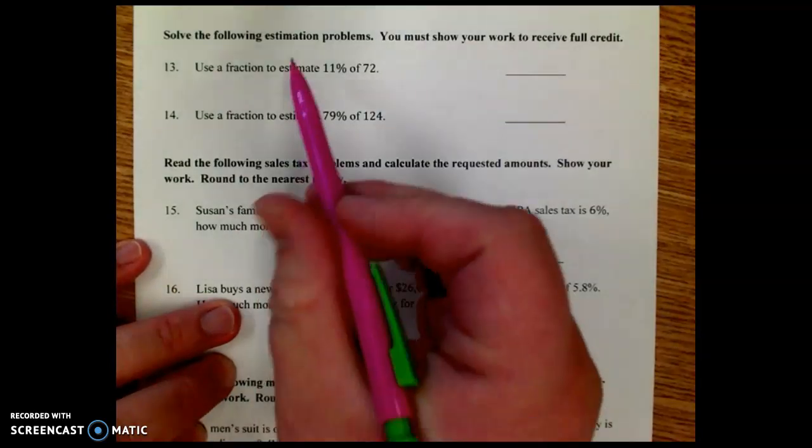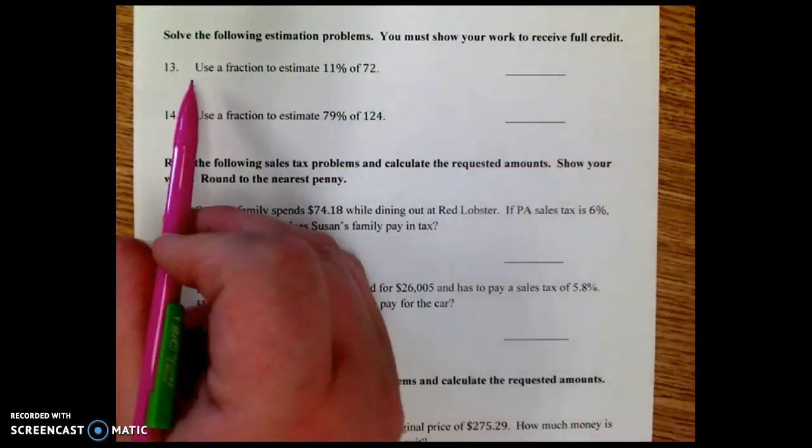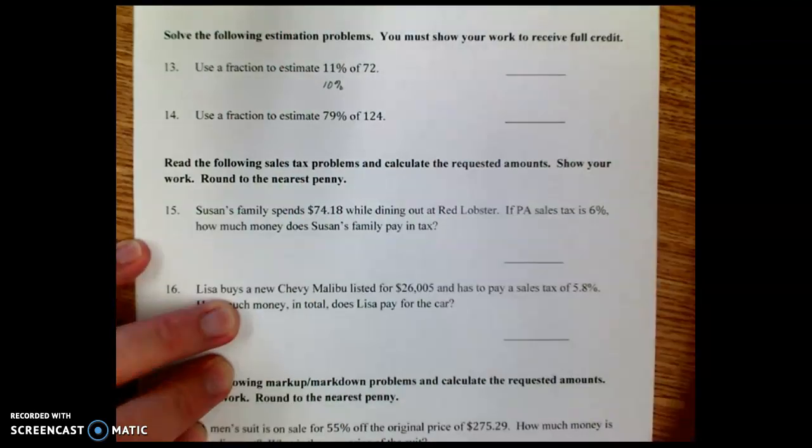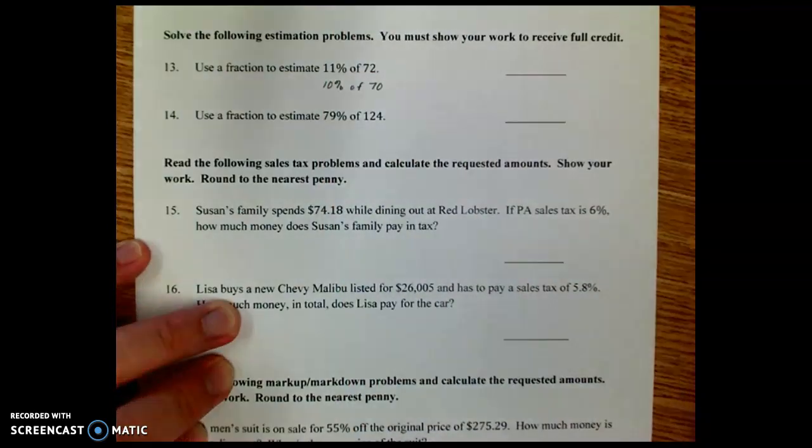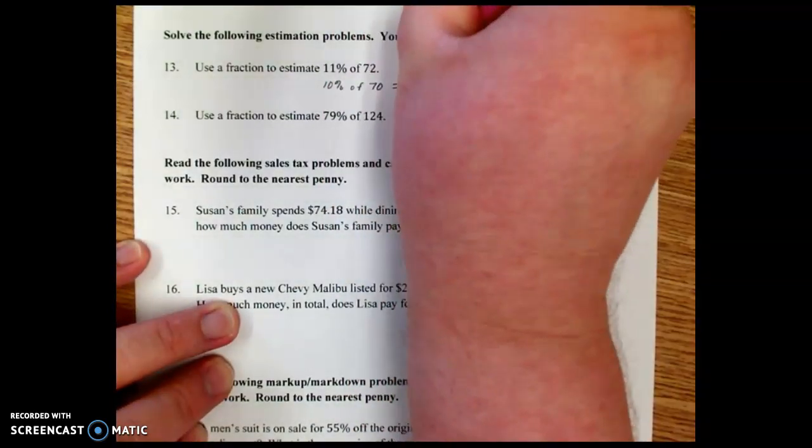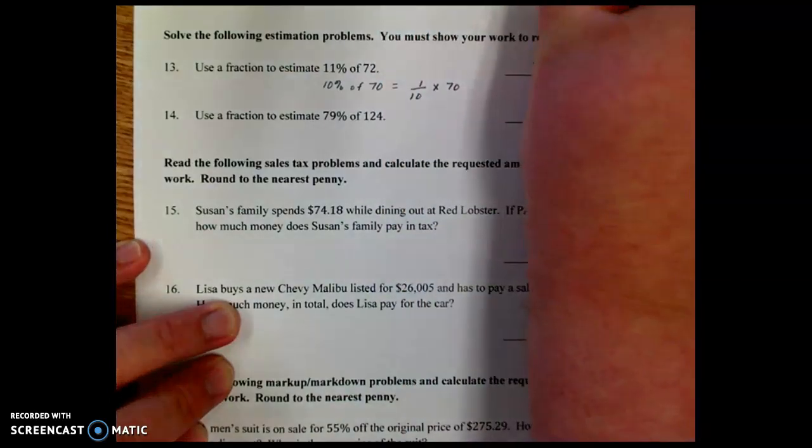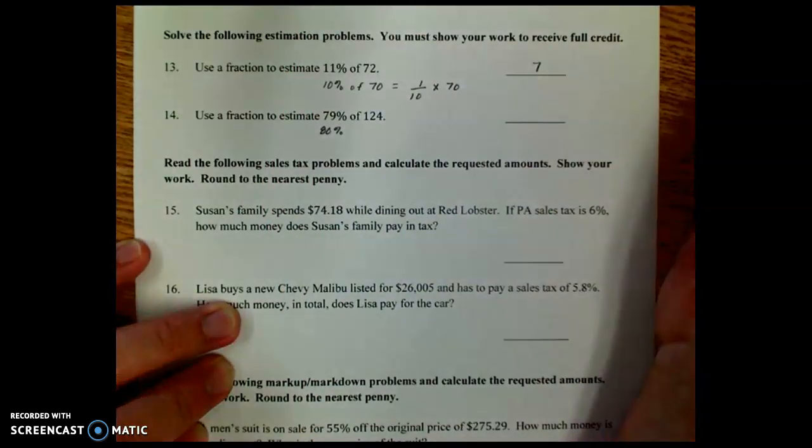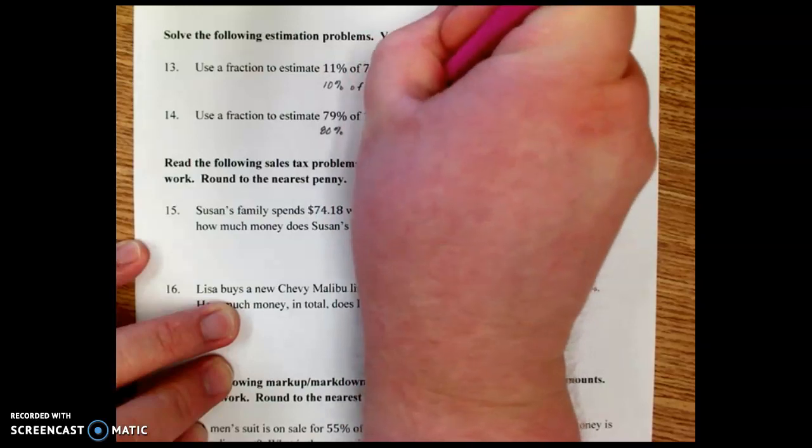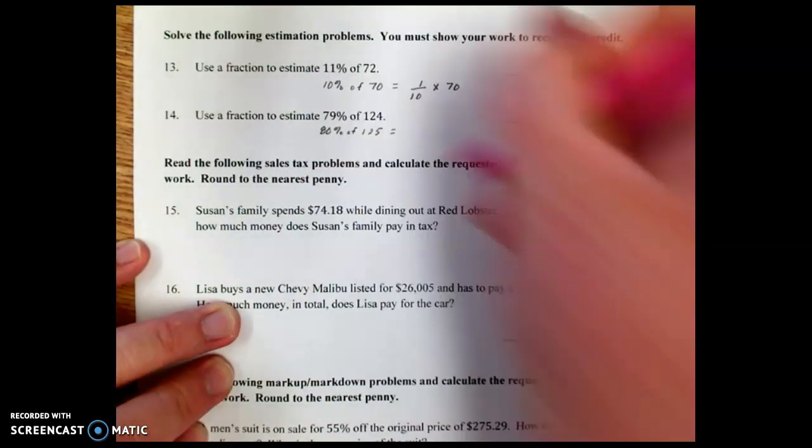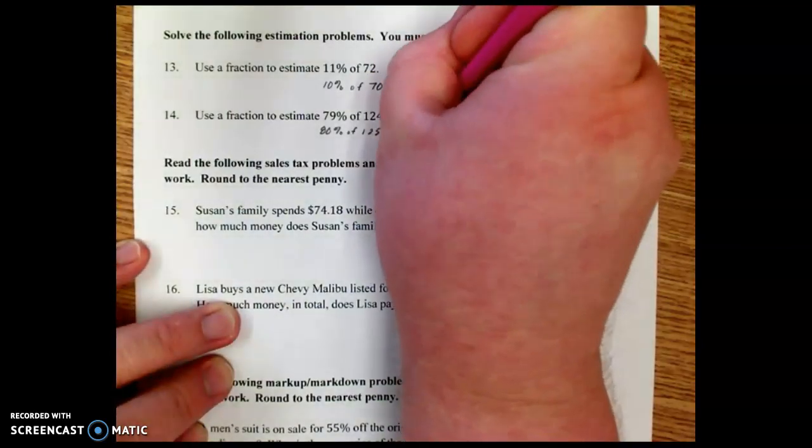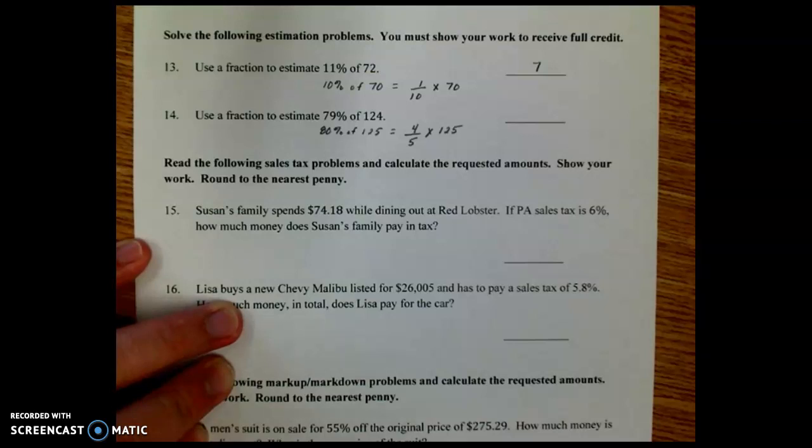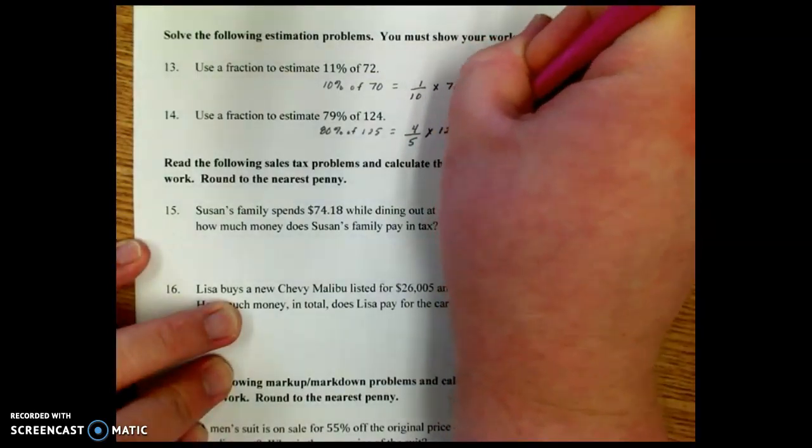In this section, we solve the following estimation problems you must show your work to receive full credit. Number 13, use a fraction to estimate 11% of 72. Well, we know 11% is very close to 10%. And 72 is very close to 70. So if we could do 10% of 70, that would be a lot easier. Well, 10% is one-tenth, and one-tenth times 70 is 7. Down here, 79% is very close to 80, and 124 is very close to 125. So if we do that, 80% of 125, 80 is one of our common fractions. That should be 4 over 5 times 125. And if we do that, we get 500 over 5, which is 100.